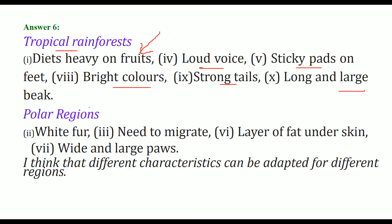In the polar region, because it's quite cold, animals have white fur and need to migrate because of excessive cold and lack of food. Animals like bears have a layer of fat under the skin which acts as an insulator. They also have large paws. Different characteristics can be adapted for different regions.